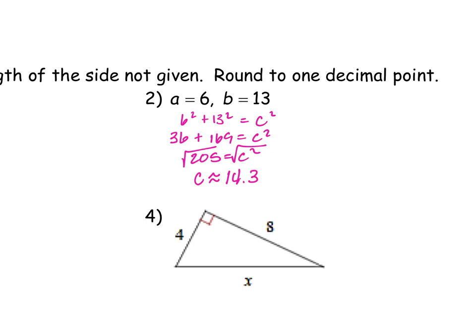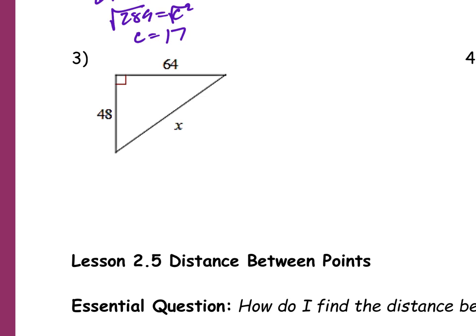Number 3 — same thing, right? Only if you have a triangle. So I've got X squared is going to equal 48 squared plus 64 squared. You guys are going to really have to help me here. X squared is going to equal 48 squared — 4,096 — plus 64 squared. Anybody know what 64 squared is?